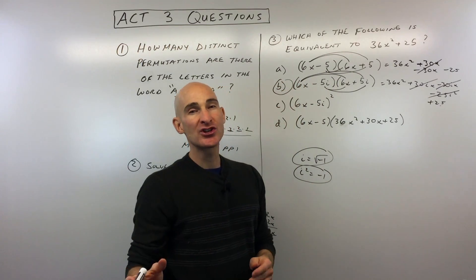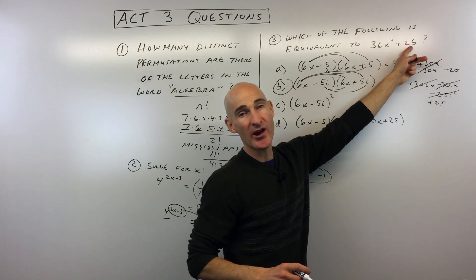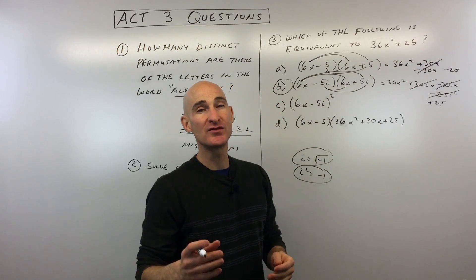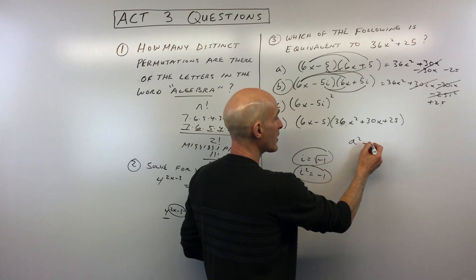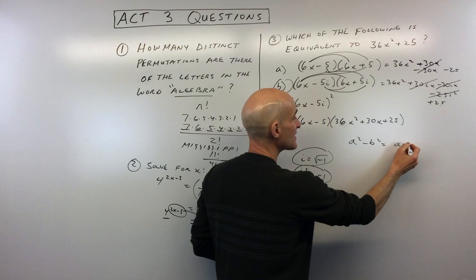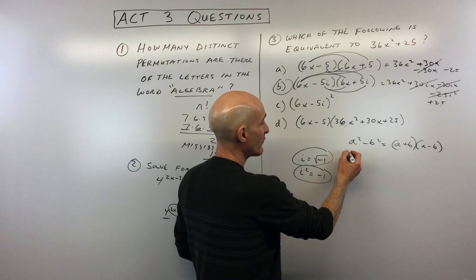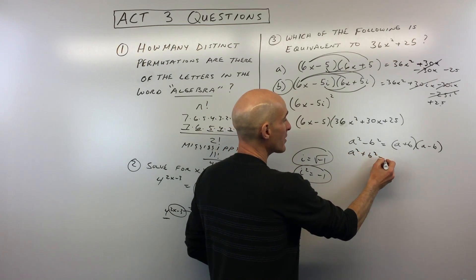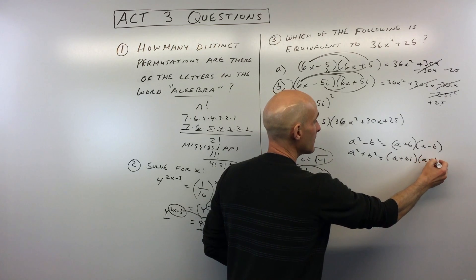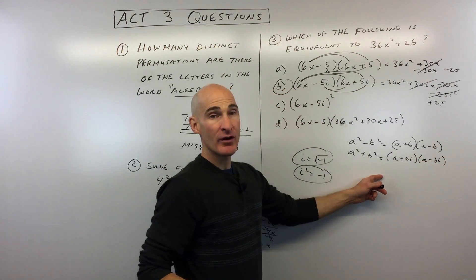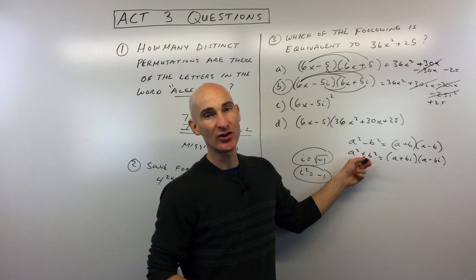But I want to just show you something real quick here about factoring a sum of two squares. We learned about how to factor a difference of two squares, and that's definitely important for the ACT. Remember, a squared minus b squared, we factor this as a plus b, a minus b. But if we've got a squared plus b squared, we factor it like this, a plus bi times a minus bi. And you can verify that by foiling this out or doing the distributive property twice, and you'll see that you get back the original here.